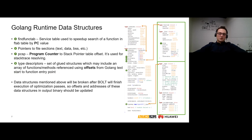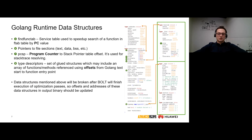FindFuncTab is a service table used to speed up search of a function in the FTAB table by PC value. There is also a set of pointers to regular file sections and a PCSP table containing PC to SP table offsets. Type descriptors describe types and their methods if they exist, using function offset from the beginning of the text section as a reference. On these slides, bold text highlights fields in these structures that use offsets, addresses, and sizes of functions which could be changed after Bolt executes optimization passes, so these fields should be updated in the output file.